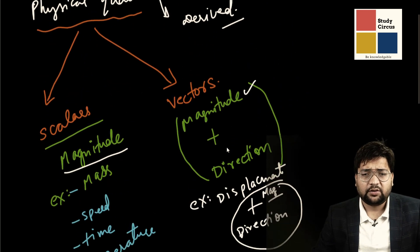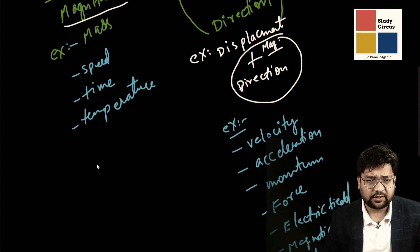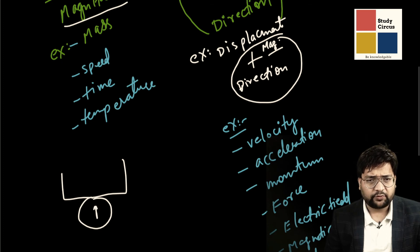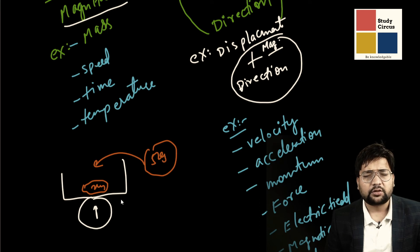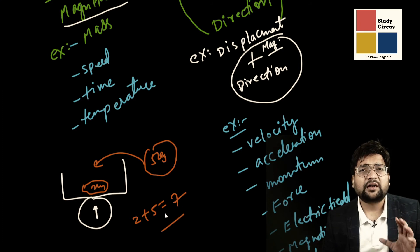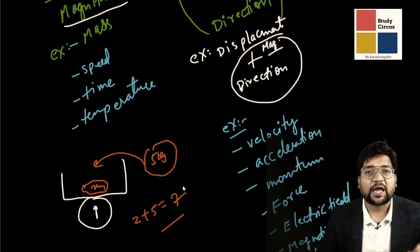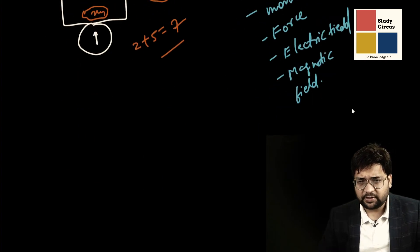Now, scalars are straightforward to add. Suppose you add 2 kilograms of mass on a weighing balance and then add 5 kilograms more — the total mass is simply 2 plus 5 equals 7 kilograms. You just add them like simple numbers. But the same cannot be done with vectors.